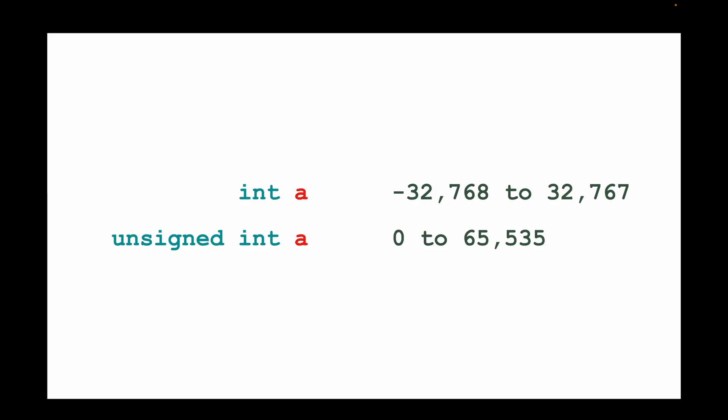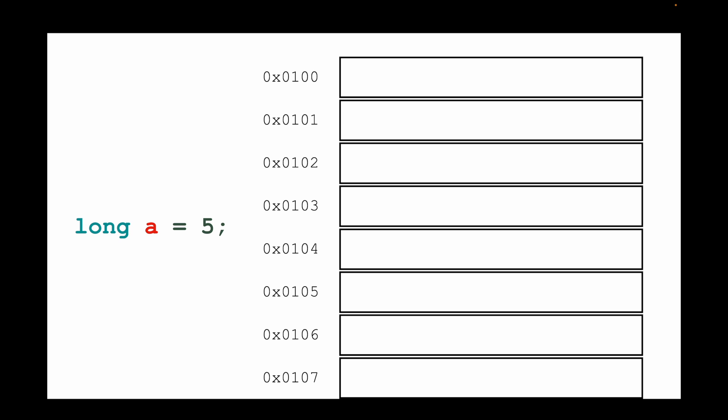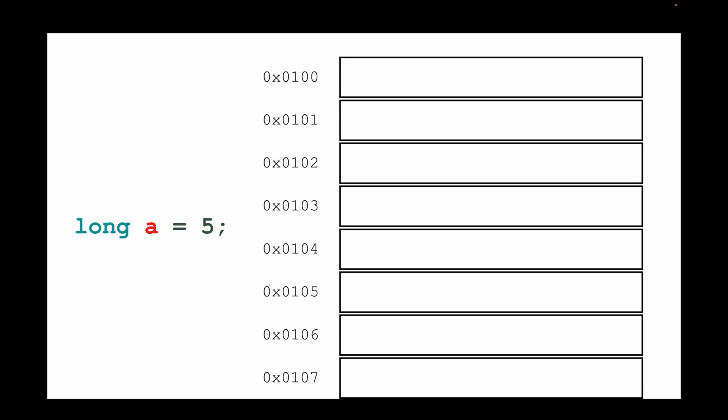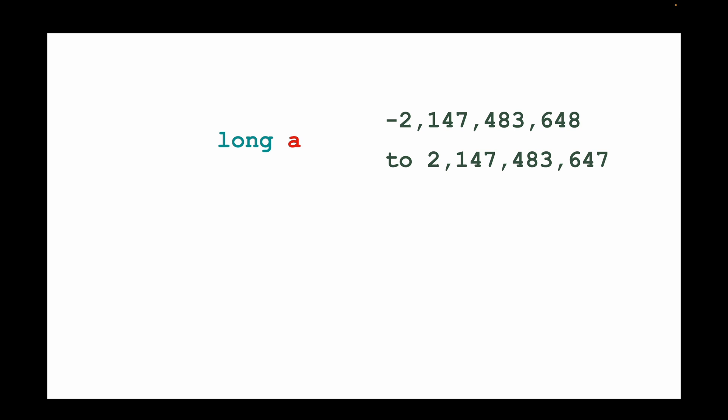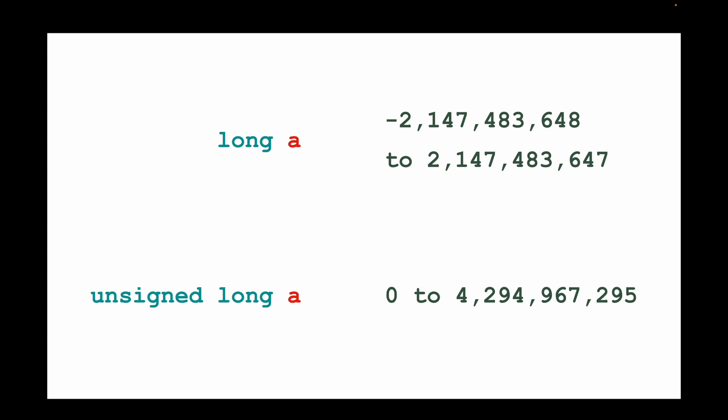With unsigned integer, overflow always wraps from the highest value to the lowest and from the lowest to the highest. If you need to store even bigger numbers, there is the long type, which requires four bytes in memory. This allows you to store numbers between negative two billion and positive two billion. Using unsigned long gives you even more range on the high end — more than four billion.